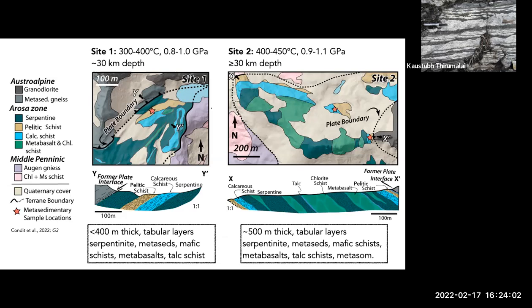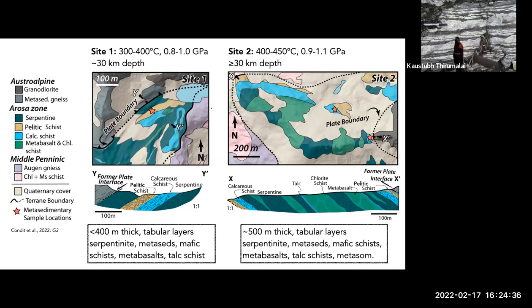At site two, conditions are at slightly warmer temperatures and similar depths. The plate interface is about 500 meters thick, with tabular layers of serpentinite, metasedimentary rocks, mafic schists wrapping around metabasalts, and talc schists. There's a lot of evidence in both areas for metasomatism — fluid-mediated chemical transformations and changes in bulk rock composition. I specifically targeted the metasedimentary rocks because we know relatively more from the rheological perspective about how strong or weak these minerals might be, and because metasedimentary rocks have been invoked as a potential mechanism that can weaken the plate interface.